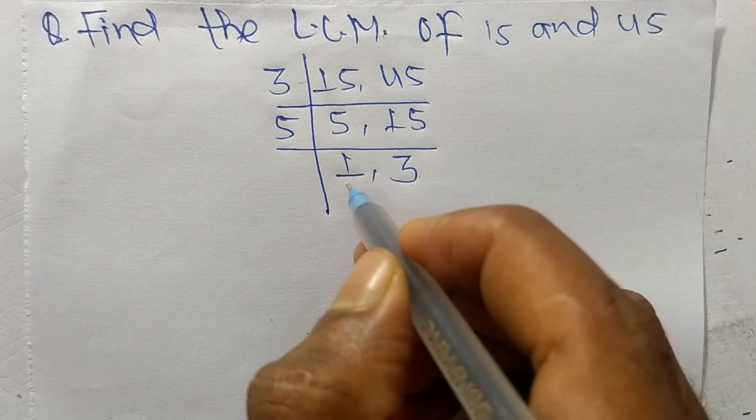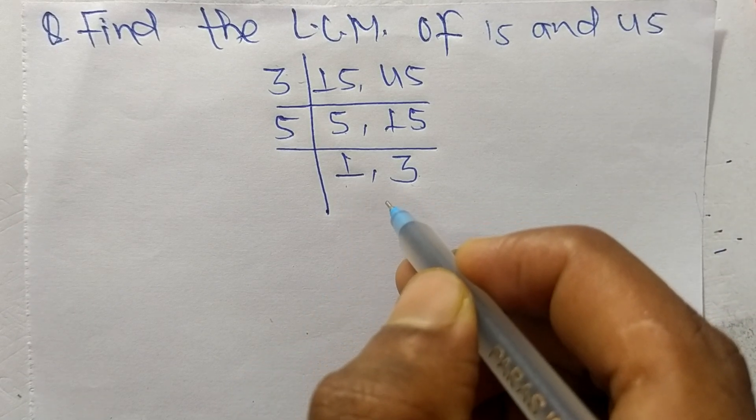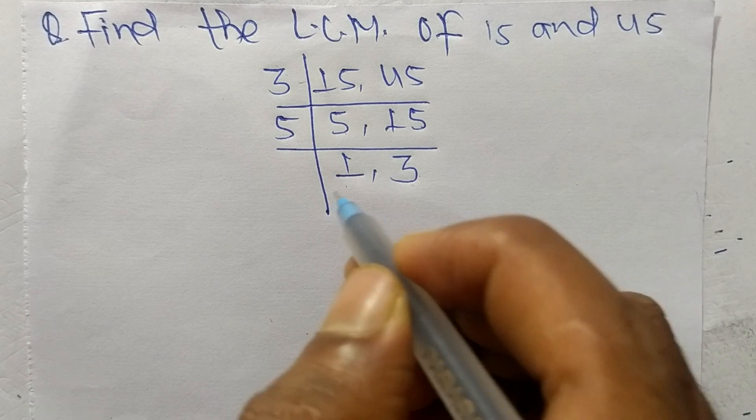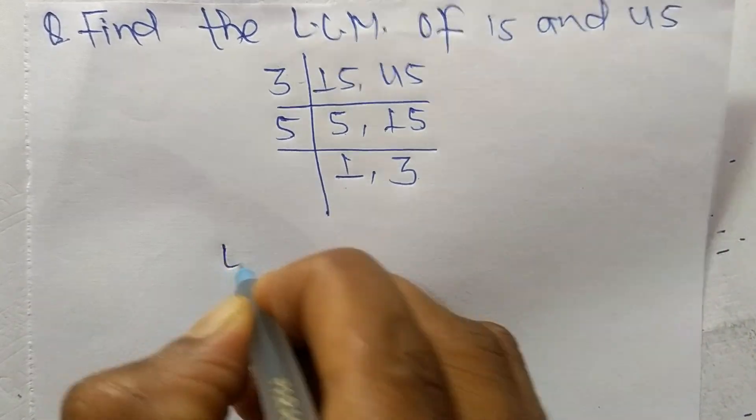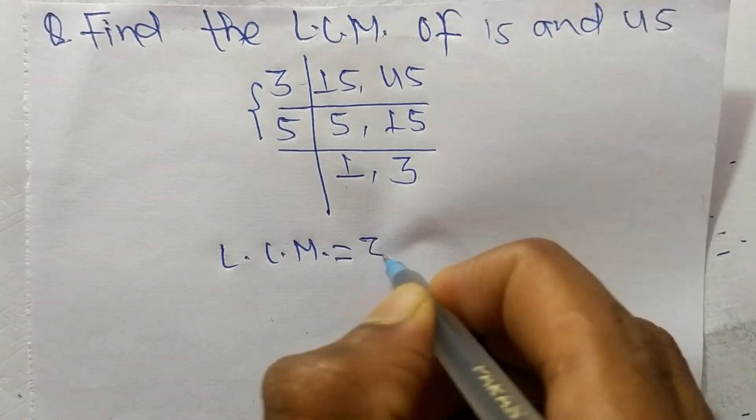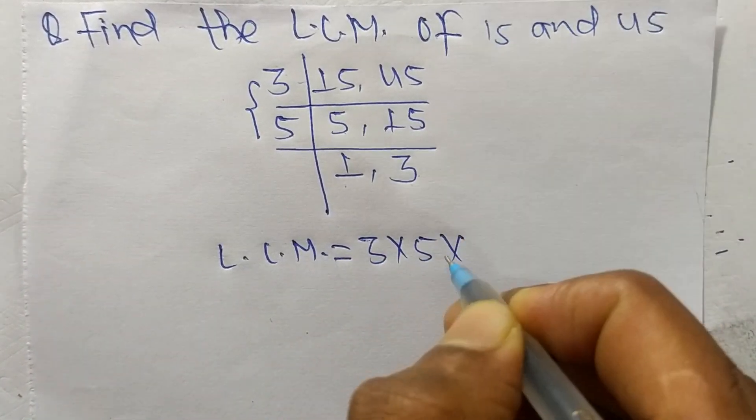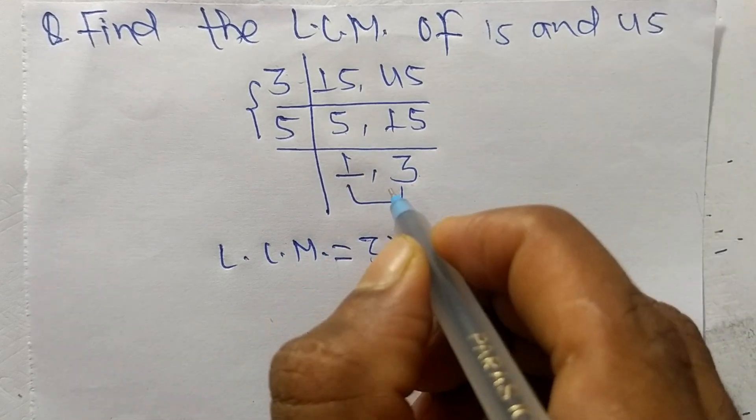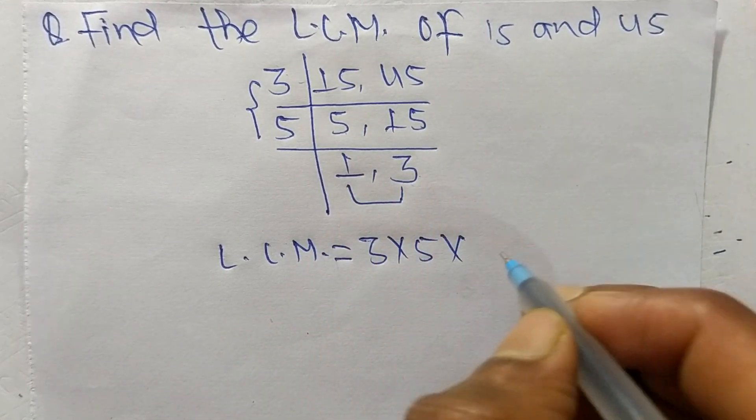So at last we have 1 and 3 which is not exactly divisible by the same number. So the LCM is equal to from this part it is 3 and 5, and from this part we have 1 and 3, but...